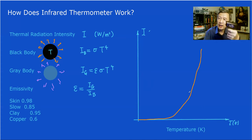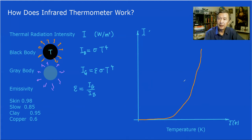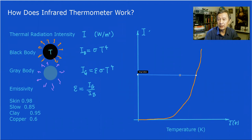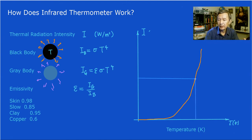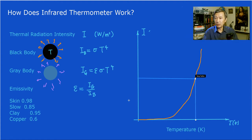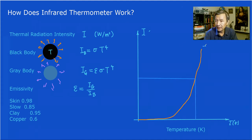Since we can measure the intensity from the object, we should be able to find its temperature. If you use this detector to measure an intensity value, the detector will calculate the corresponding temperature based on that number. So if you measure a certain intensity, the detector finds the temperature from this curve. But keep in mind that this curve here represents the intensity of the black body.